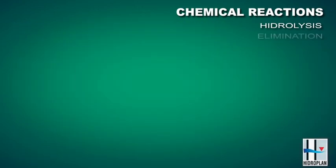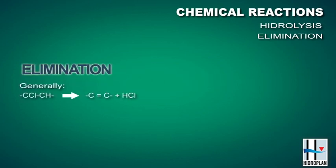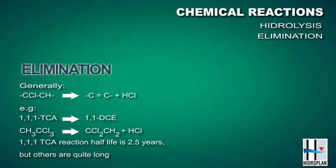Another reaction is elimination, where essentially a chloride or another halide is removed, causing a double carbon bond to form. 1,1,1-TCA can undergo that reaction as well, producing 1,1-DCE. That's an important illustration of the benefit or the liability of a reaction — that reaction is removing the target chemical 1,1,1-TCA, but in all likelihood it's producing a more toxic, more soluble, more mobile chemical, 1,1-DCE. So in this case, the reaction may in fact not be beneficial for natural attenuation.